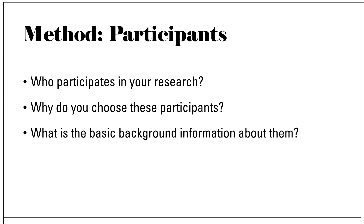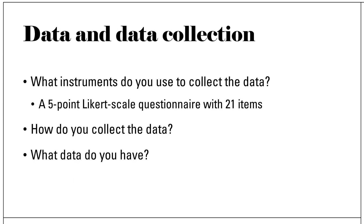In the method section, you should also explain the participants of your research — who participates in your research, why you choose these participants, and what the basic background information about them is. Then you need to describe your data and data collection. It is really important to explain what instruments you use to collect the data. For example, you may say: I used a 5-point Likert scale questionnaire with 21 items. You also need to explain how you collect the data and what data you have.